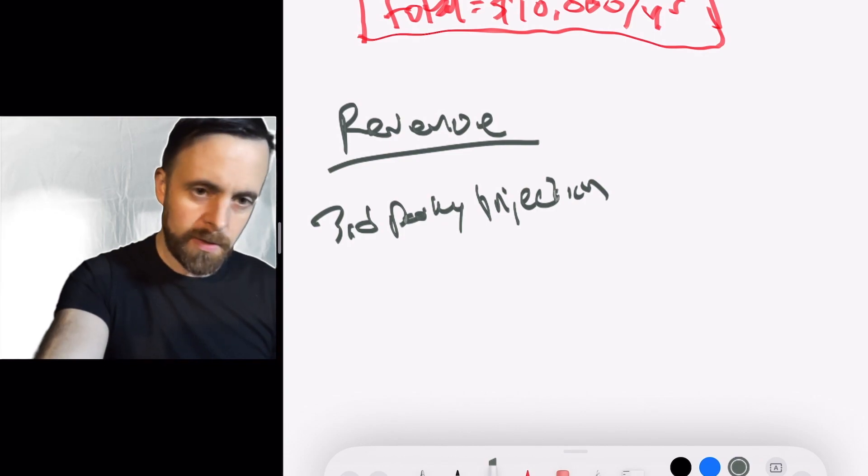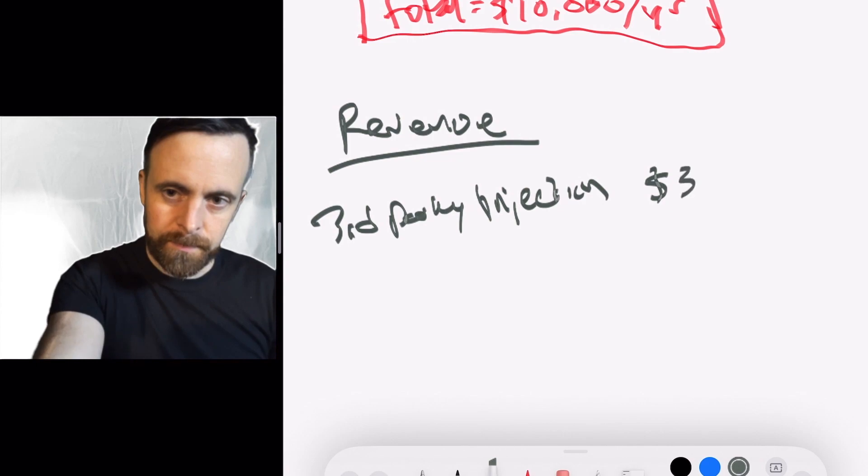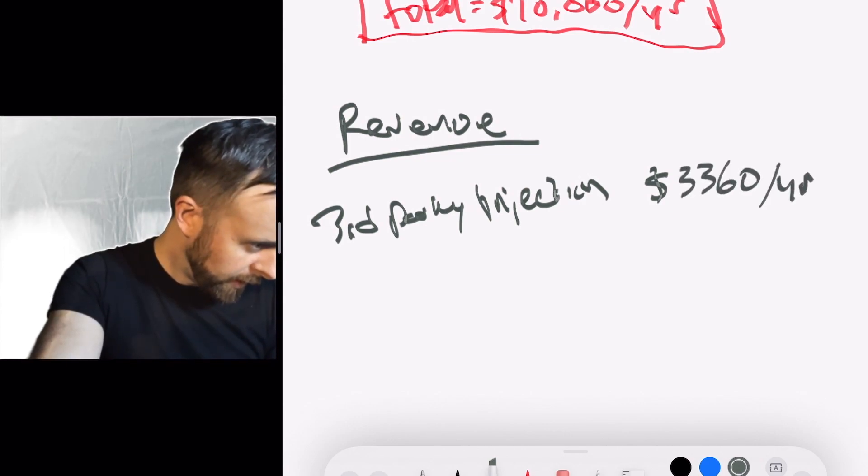You get around four cents per user per month. So again, at that 7,000 user figure that we had found earlier, that's going to be around $3,360 per year.